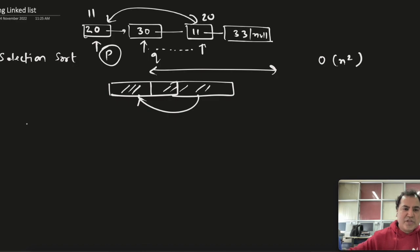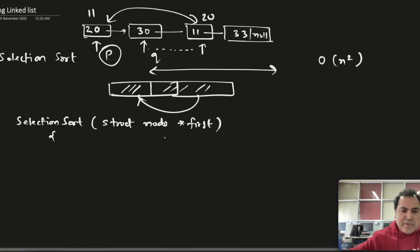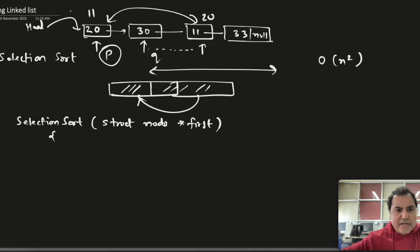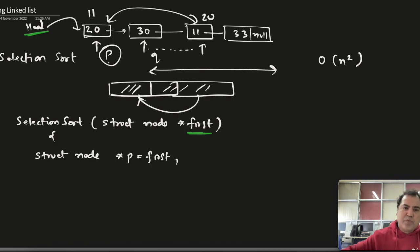I will write a pseudocode. The function is called selection sort and I pass the head pointer of the linked list. The function signature uses struct node star first. The head pointer will be passed here. Then I take a local pointer p which points to first.